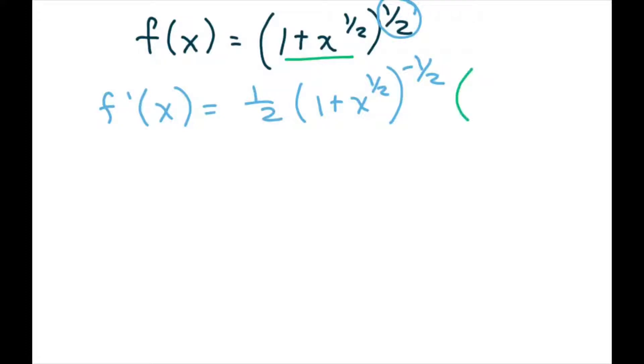And then you take the derivative of your inner function. And the derivative of your inner function, the 1 would go to 0, so you have 1 half x to the negative 1 half.